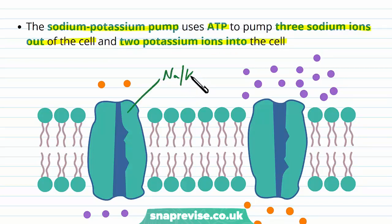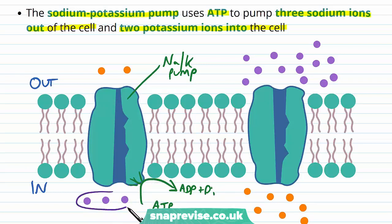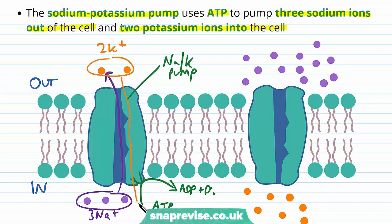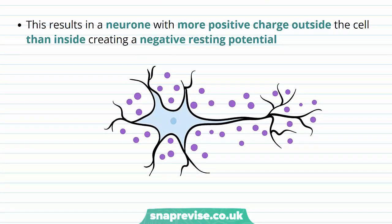The sodium potassium pump — often abbreviated as the Na/K pump — uses ATP to pump three sodium ions out of the cell and two potassium ions into the cell. ATP is hydrolysed into ADP and Pi, releasing the energy to move things against their gradient. It sends three sodium ions out to the outside and takes two potassium ions in as an exchange. Every time this happens, we get a net loss of one positive charge from the cell — three go out, two come in. So the outside is becoming more positive, and overall the neuron has a more positive charge outside than inside, setting up the negative resting potential.